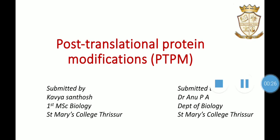Before going to the topic, we can remind what translation is. There are mainly three processes that happen with your genetic DNA molecules: DNA replication, transcription, and translation. Replication is the duplication of parental DNA to daughter DNAs. Transcription is the formation of daughter RNA from the parental DNA. And translation is the formation of polypeptide chains or proteins from the RNA molecules.